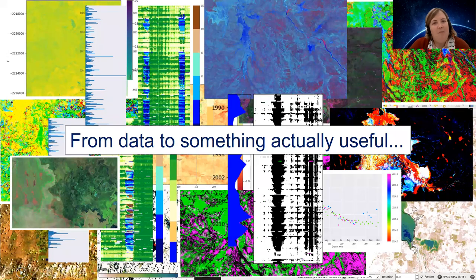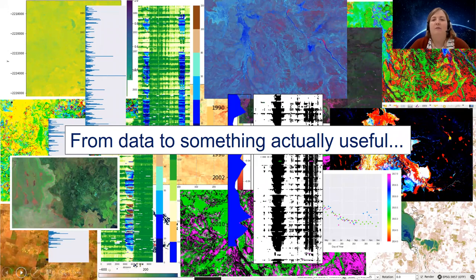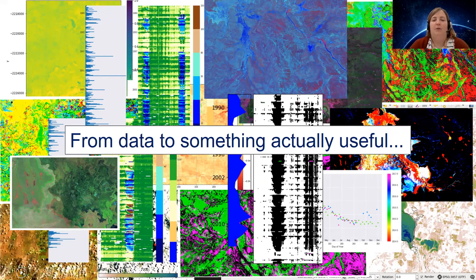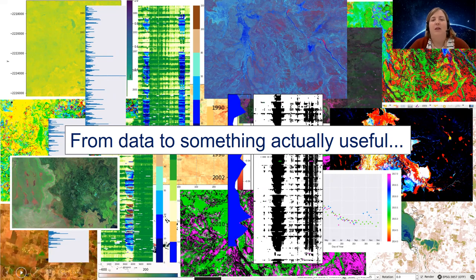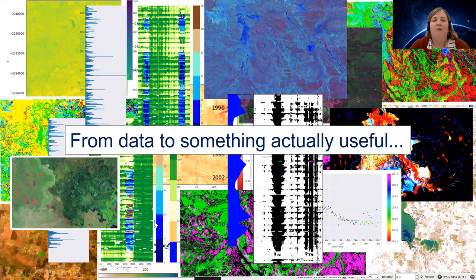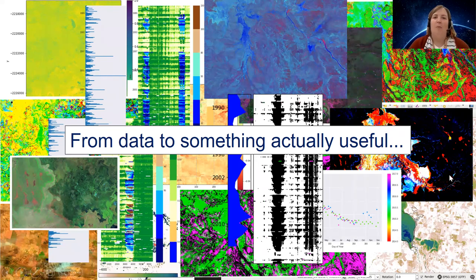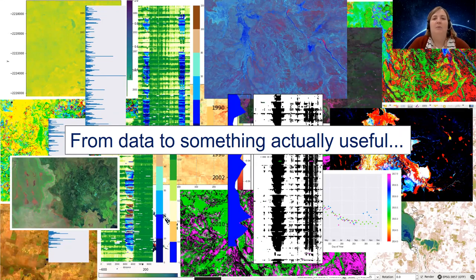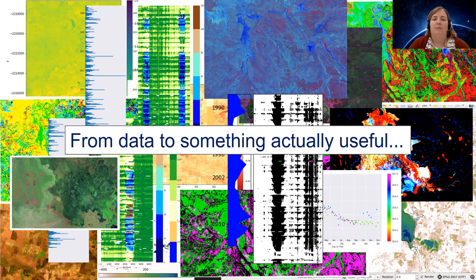We have petabytes of data across all of Australia going back to 1987, captured every 16 days or so, and there are literally infinite ways we can analyse that information. Our job is to turn that data into something actually useful. What you see in the background is a selection of imagery produced in various ways to visualise the information, making use of the Open Data Cube to pre-process and automate the processing of those datasets.